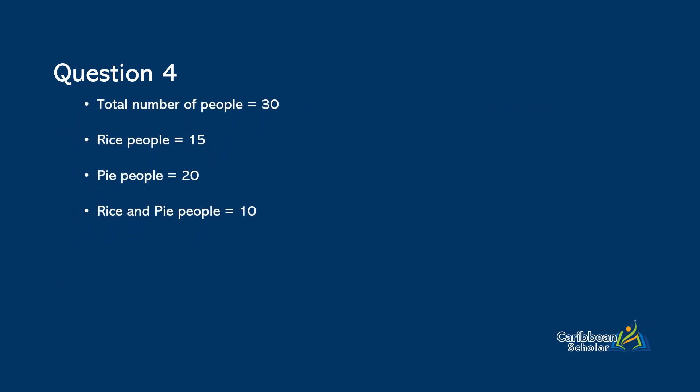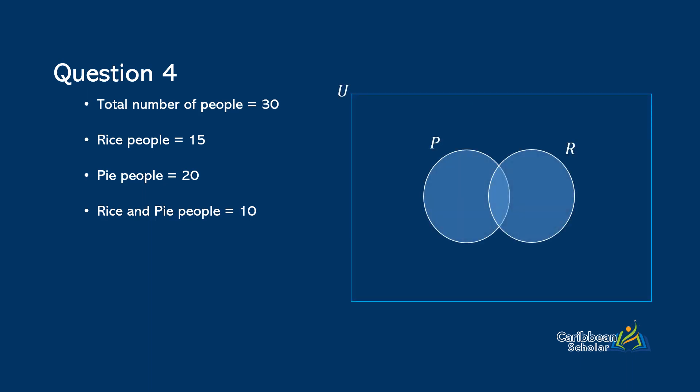So let's first record the last bit of information and that is, there are ten people that eat both rice and pie. And then the question is, how many people did not eat rice or pie? Okay, so let us get rid of all of the extra and now this is what we want to deal with. So you want to draw a Venn diagram of this information so that you could actually see what is going on in the question. So we'll go ahead and do that now.